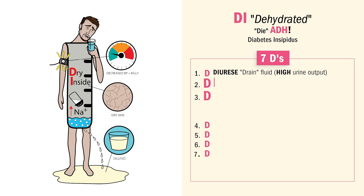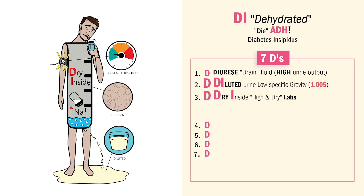So we get very diluted urine, with very low specific gravity — less than 1.005. That's a huge NCLEX term we saw a lot. Think about all that urine coming out — you're getting dehydrated. So high and dry labs. Think DI for dry inside, high dry labs.